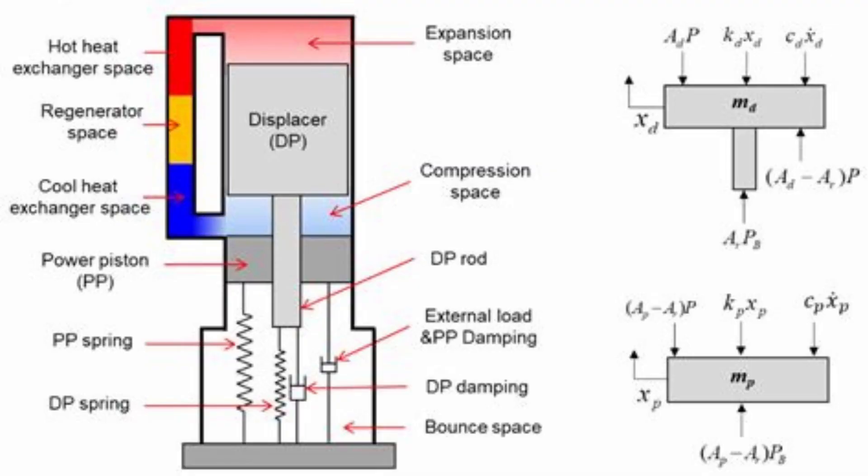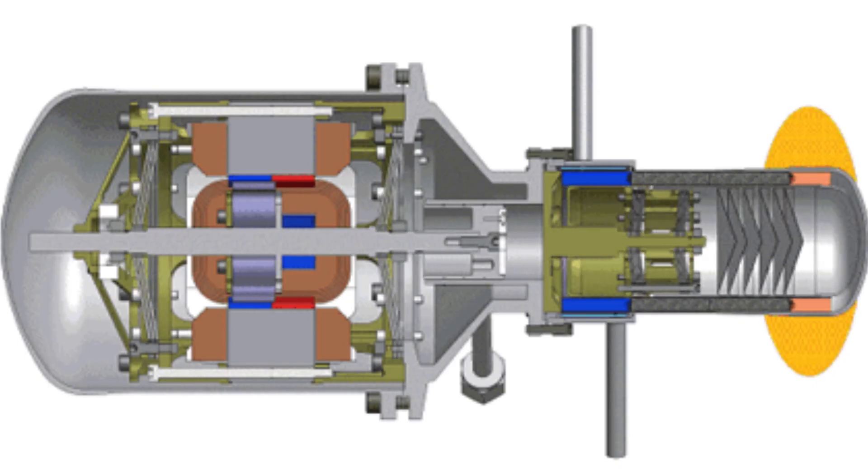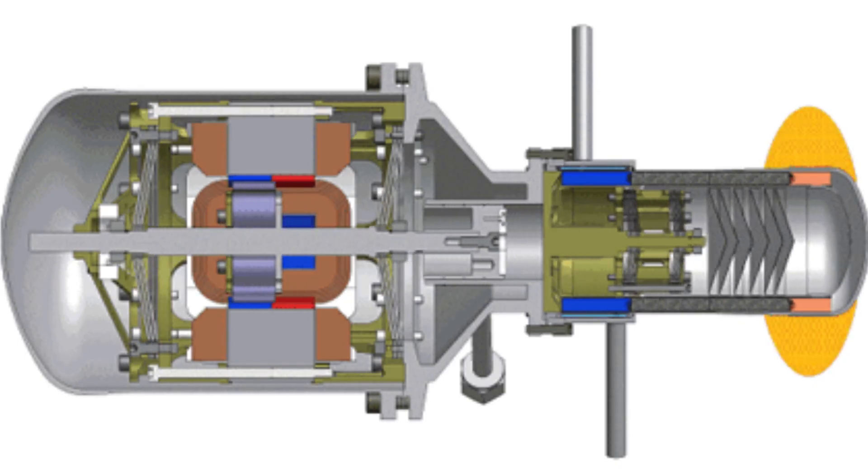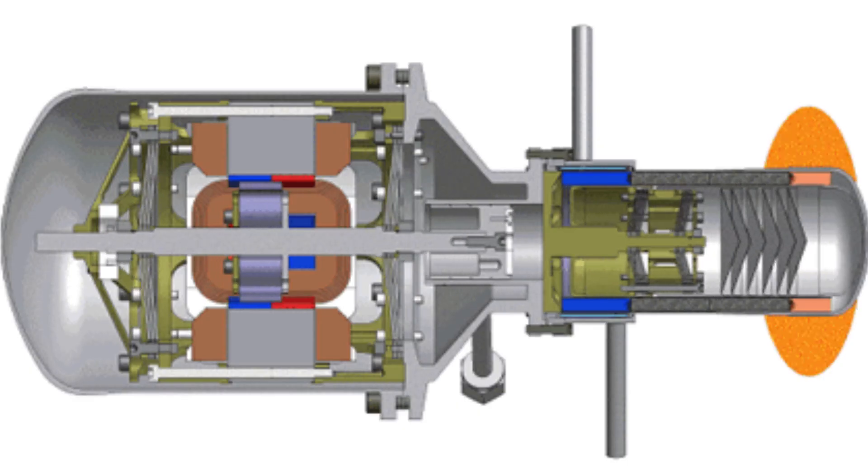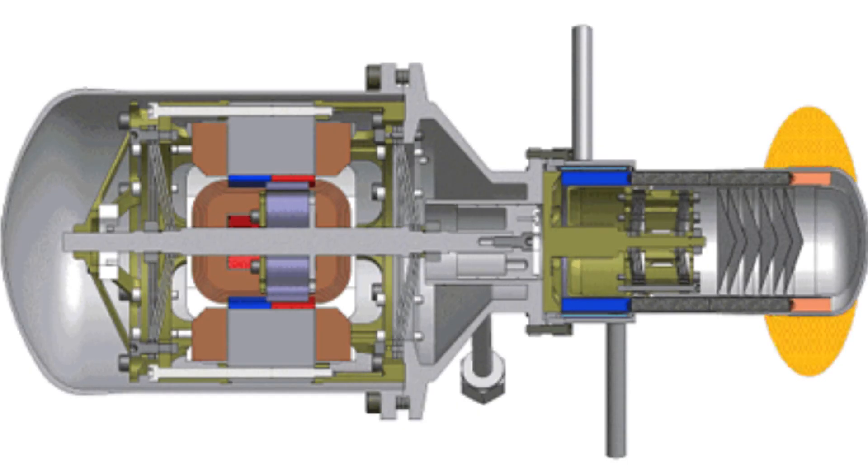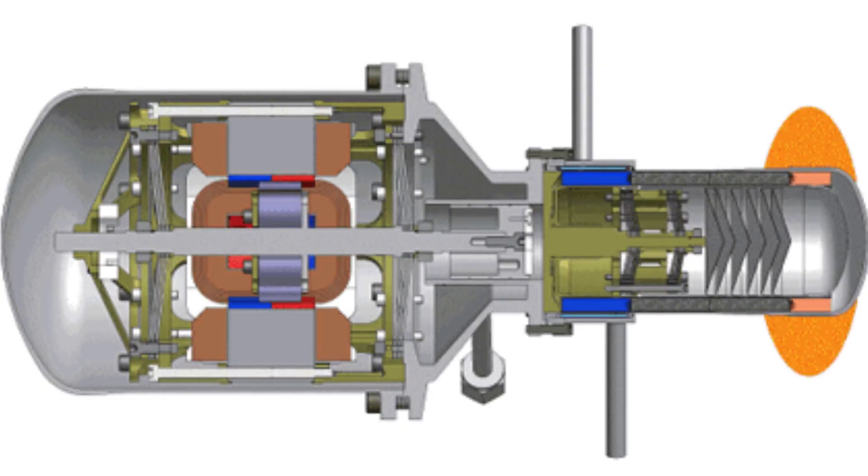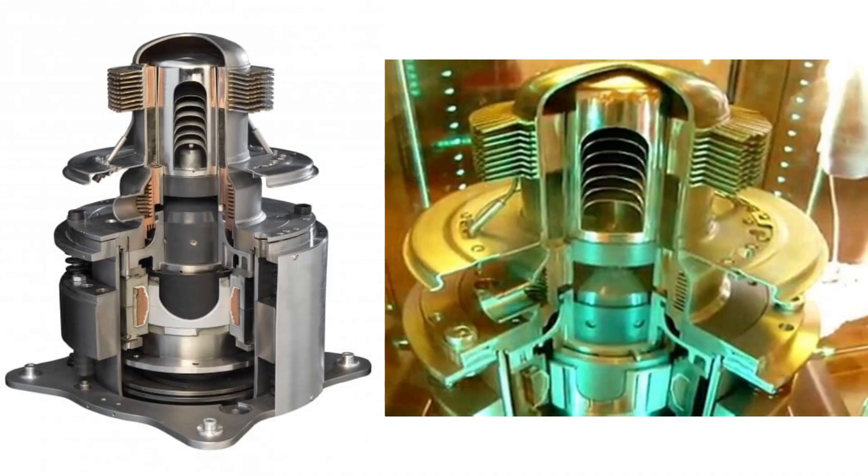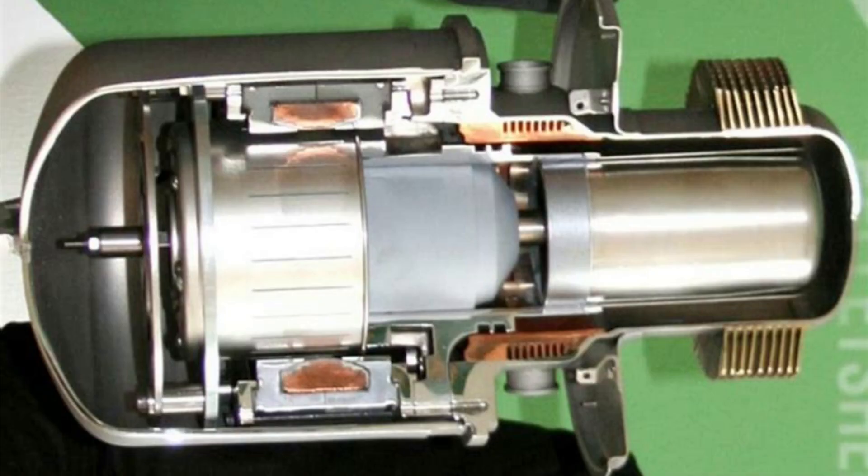The piston and displacer move entirely in response to the working gas or other spring forces acting upon them. The free piston engine is a dynamic resonant system operating at a more or less constant frequency and is self-starting. It requires only a slight random perturbation to set it in motion. There are no major side thrusts on the piston and displacer which relieve the lubrication and wear problems sufficiently to permit the use of gas lubricated pistons.